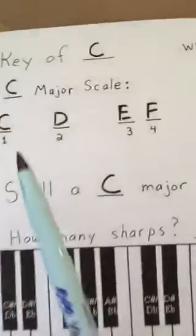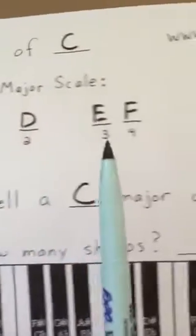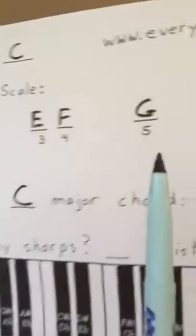Sounds very familiar, like Do, Re, Mi, Fa, Sol, La, Ti, Do. And back to our paper where we said 'spell a C major chord.' The way you do that is you look up at your scale — you look at the first note, the third note, and the fifth note, which is C, E, G.